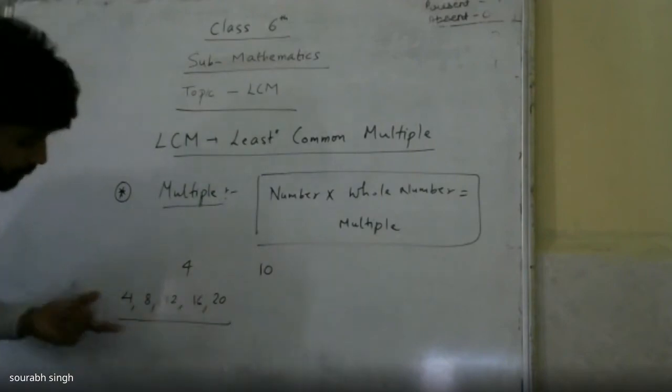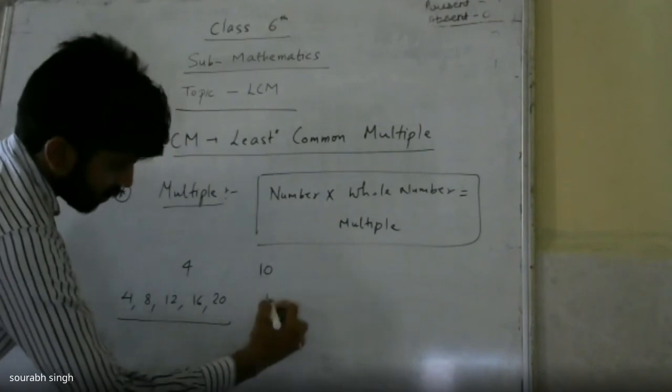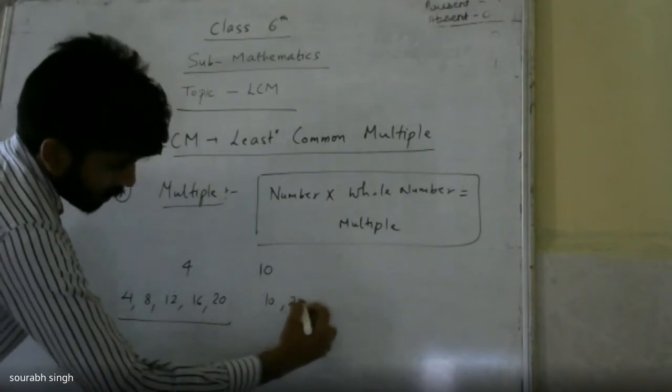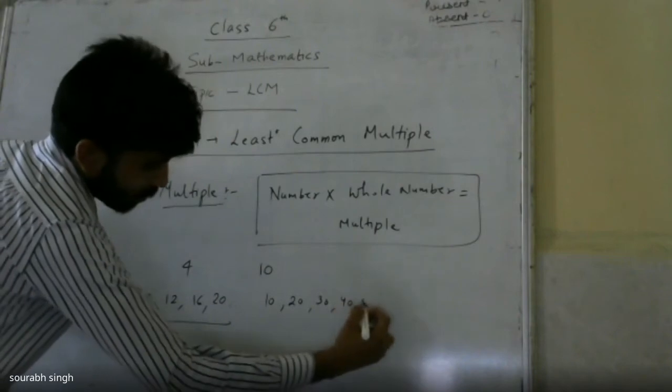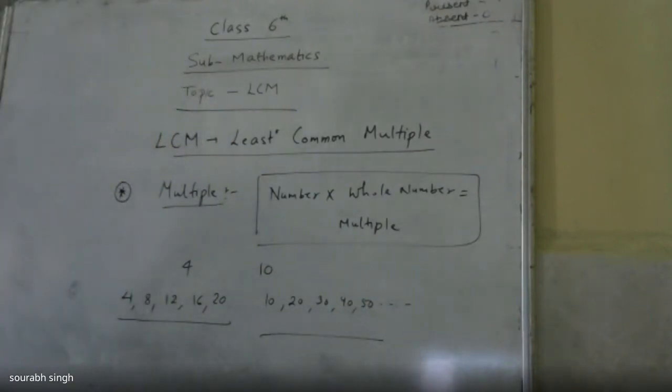Here we write the first 5 multiples of 4, as well as multiples of 10: 10, 20, 30, 40, 50. First 5 multiples of 10.